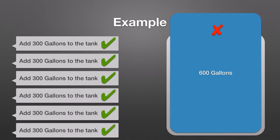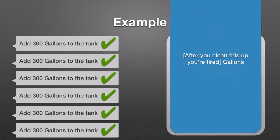Chainsaw's stateful whitelisting solves this problem by being aware of the change in state after the first command is executed, and would have flagged the subsequent commands as invalid.